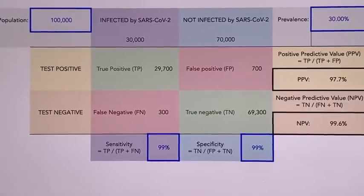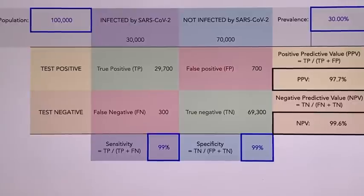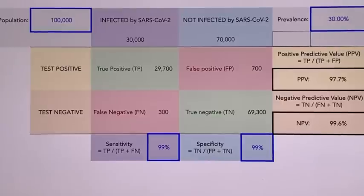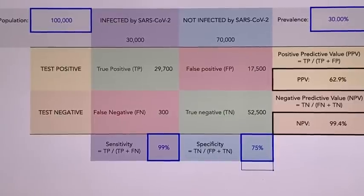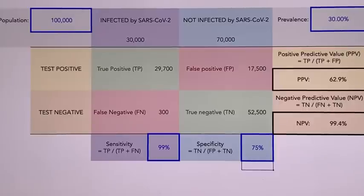Let's make this realistic, because there is no test that is both 99% sensitive and 99% specific. As a general rule, as a test becomes more sensitive, it becomes less specific and vice versa. So let's keep 99% sensitivity but assume specificity drops to 75%. In a high prevalence situation, our negative predictive value stays great — if you get a negative test, you're very likely truly negative. But your positive predictive value is better than a coin toss, but not by much.